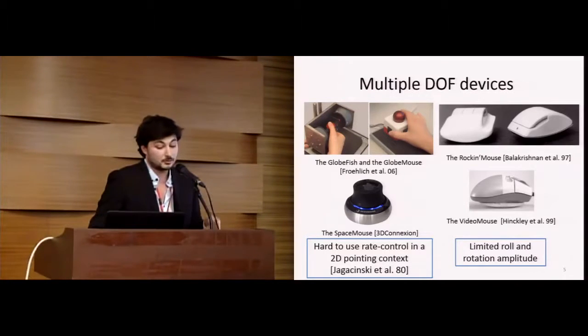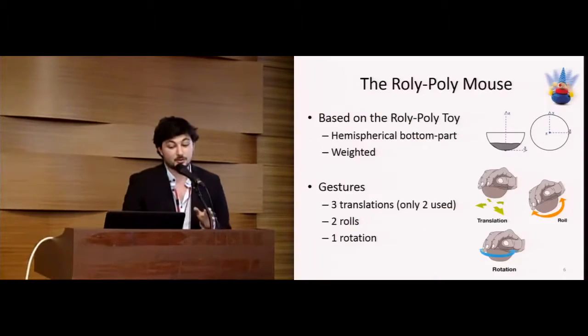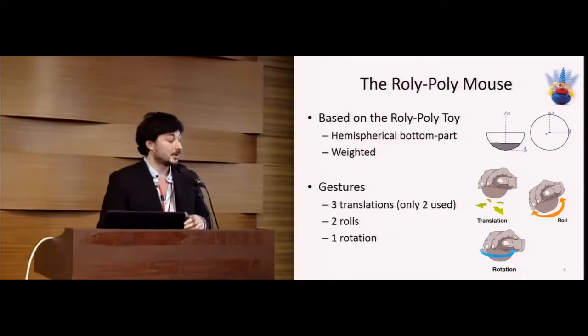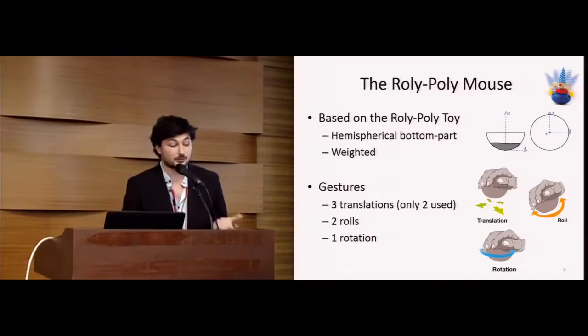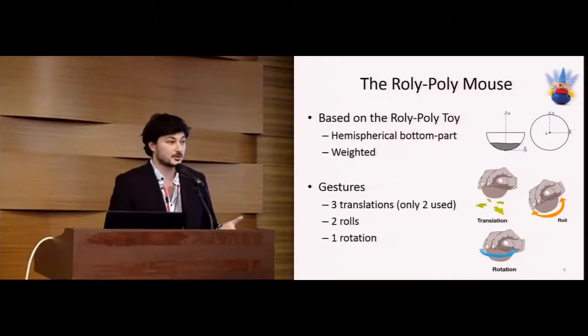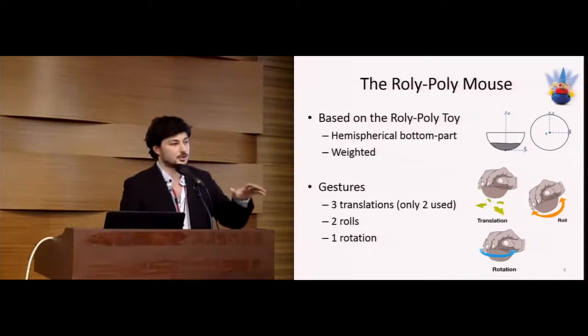In order to cope with this problem, we propose the Roly-Poly mouse, an augmented mouse based on the Roly-Poly toy principle. It has a hemispherical bottom part and it's weighted so it can auto-realign when released. It allows for three different gestures: 3D translations, two rolls left-right and front-back, and one rotation left-right.